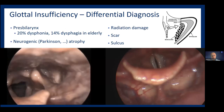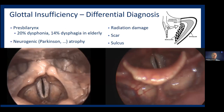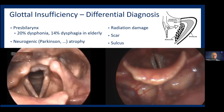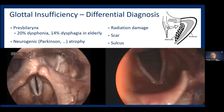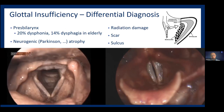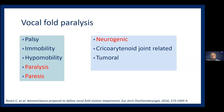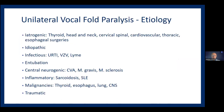We know that presbylaryngis affects like 20% of elderly larynges with atrophy, or we may have dysphonia. The reason may be neurogenic or secondary to radiation deficiency. Regarding nomenclature, when we talk about paralysis or paresis, the origin is usually neurogenic. For other problems that lead to motion issues at the vocal folds — like joint problems or tumoral problems — people prefer to use the words immobility or hypomobility.